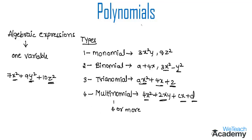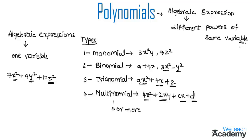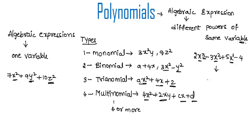A polynomial is an algebraic expression that contains different powers of the same variable. For example, consider the expression 2x cubed minus 3x squared plus 5x minus 4, which has different powers of the same variable x. We call this type of expression a polynomial expression.